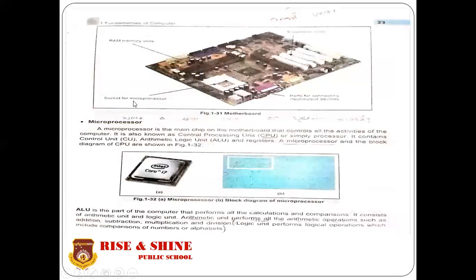On the motherboard you can find RAM and memory slots, expansion slots, sockets for the microprocessor, and ports for connecting input-output devices. The next part is the microprocessor, which is the main chip on the motherboard. It controls all the activities of the computer. It is also known as the Central Processing Unit, CPU, or simply processor.